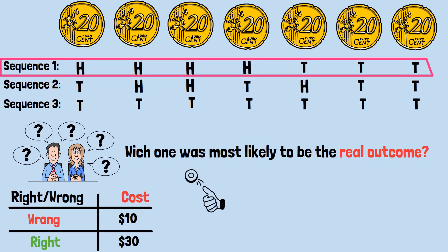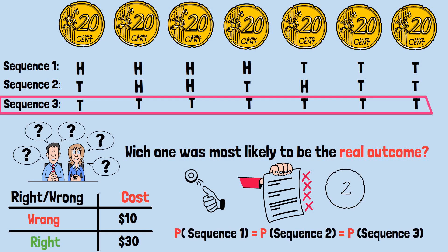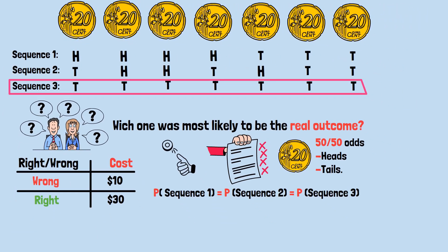When a group was polled, the top choice was sequence 2, followed by sequence 1, and then sequence 3, for all the wrong reasons. The probabilities of all three sequences are exactly the same.